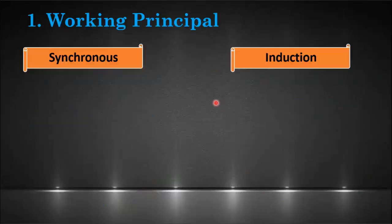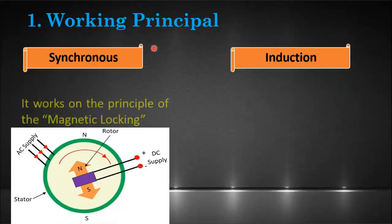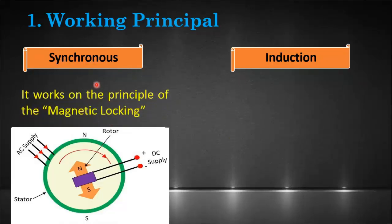The first difference is based on the working principle. The synchronous motor works on the principle of magnetic locking. There are two magnetic fields in the synchronous motor — one on the stator and the other on the rotor — and the rotor field locks with the magnetic field of the stator, causing the rotor to rotate at synchronous speed.